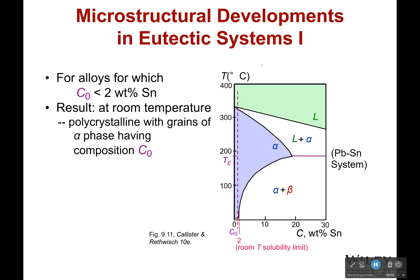Okay, now let's talk about the microstructure that develops in a eutectic system because this is pretty cool. So first off, let's look at alloys for which there's just two weight percent tin.